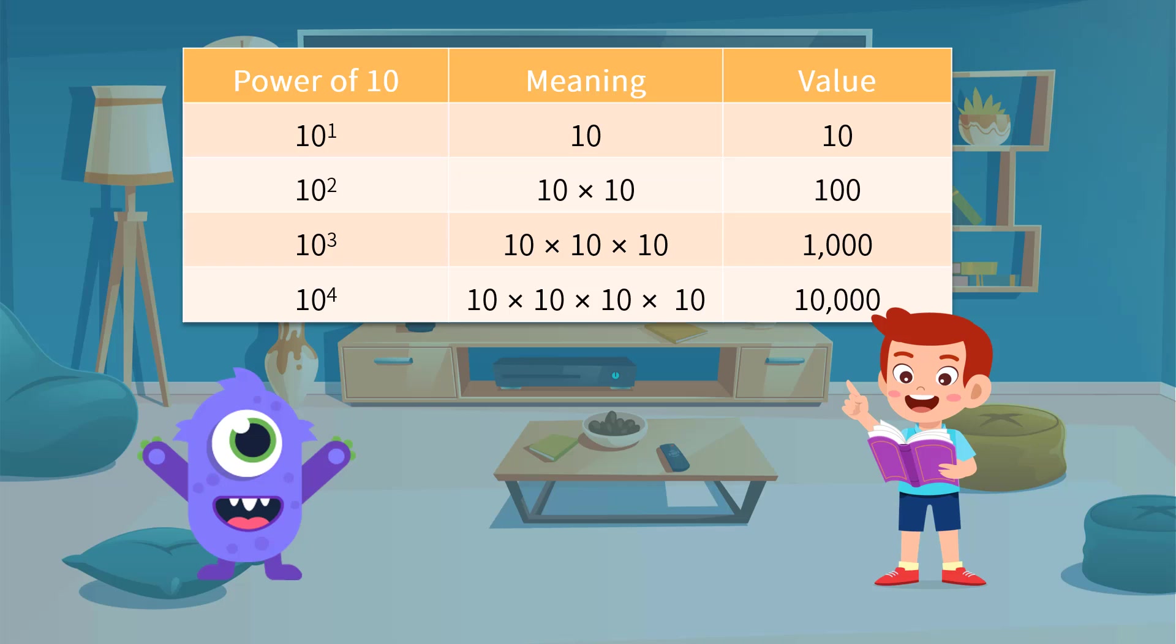there are two zeros, three zeros, or four zeros following after one, which gives one hundred, one thousand, and ten thousand.